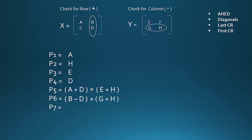Then we will consider our next point that is first CR. First column of X is AC. Since it is a column we will write A minus C. First row of Y is EF. Since it is a row we will write E plus F. We have completed P5, P6 and P7.